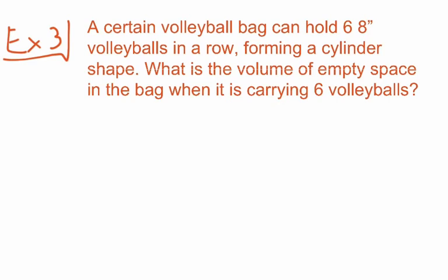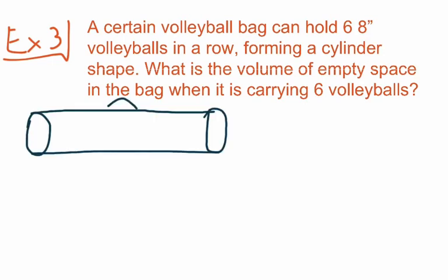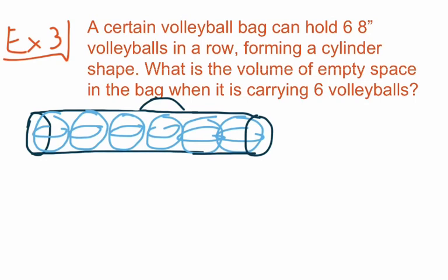For the last example, we're told that a certain volleyball bag can hold six 8-inch volleyballs in a row forming a cylinder shape. What is the volume of empty space in the bag when it is carrying six volleyballs? We'll draw a cylinder laying on its side with a carrying handle up at the top, and inside the bag we'll have six volleyballs. Each volleyball has a diameter of 8 inches, so the carrying case also has a diameter of 8 inches.